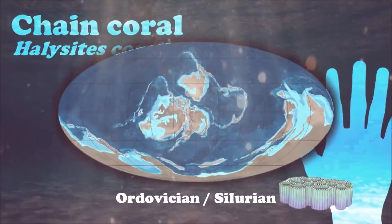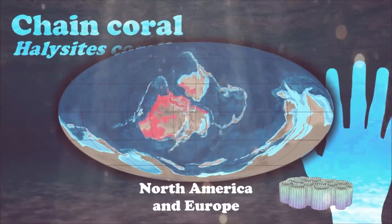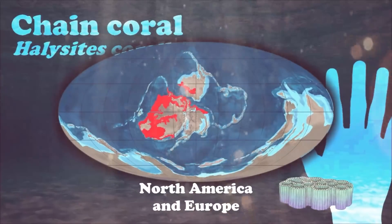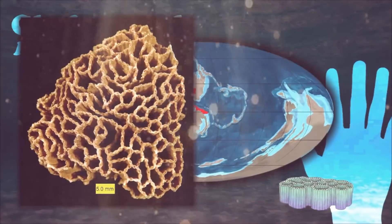Halysites is another tabulate coral. Colonies range from less than one to tens of centimeters in diameter, and they fed upon plankton.